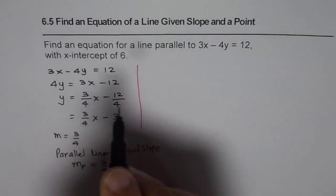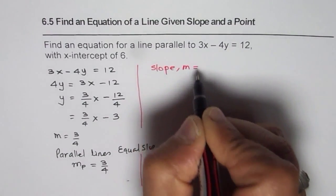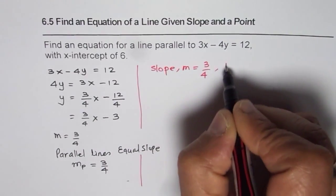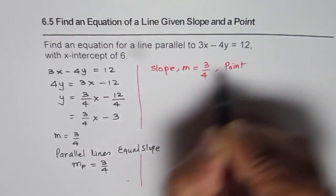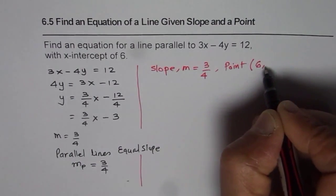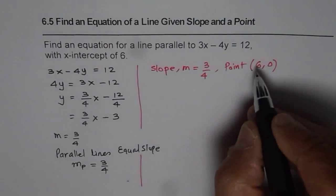Now let us find the point. So we know slope m for our line is 3 over 4. And we also know that the point is x intercept of 6. So that means 6 is the x value and y value should be 0. So the point is 6, 0.